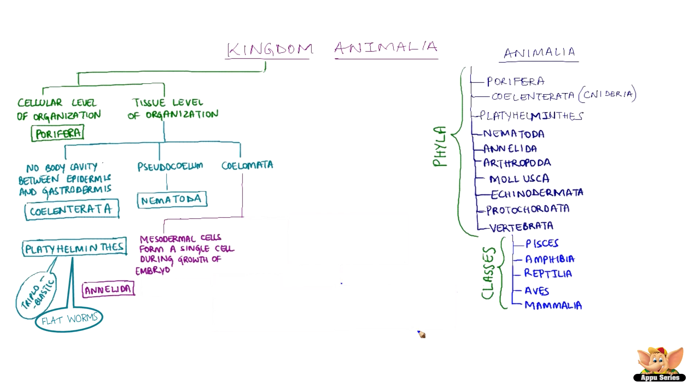Annelida means ring. Annelids have ring-like segments from head to tail. They are also triploblastic but have a true body cavity. There is extensive organ differentiation. Earthworms and leeches are examples.